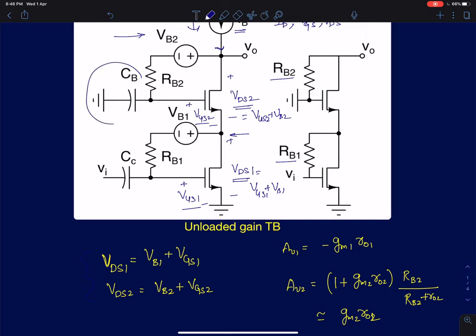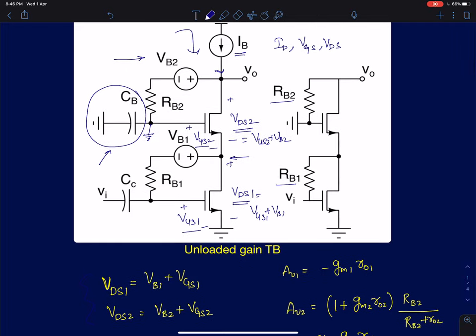A capacitor CB is added at the gate of the second device to ensure that the second stage behaves like a common gate amplifier. At the frequencies of interest, this capacitor CB should look like a short circuit. In the AC equivalent, the capacitors act as short circuits, leaving just RB1 and RB2.